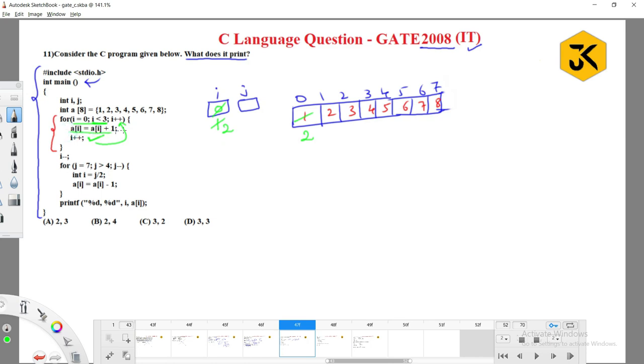Then a of two equals a of two plus one, which is four. And then i value incremented by one, that is three, and this i incremented by one, that is four. Then four less than three, condition false, it'll exit the block.